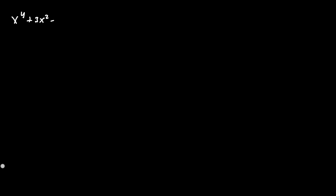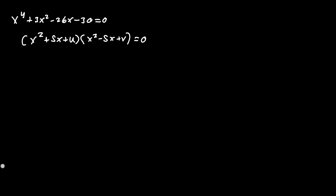Let's look at the quartic: x⁴ plus 3x² minus 26x minus 30 equals 0. We're going to split this into two quadratic factors: x² plus sx plus u, times x² minus sx plus v, equals 0. After expanding everything out, we get that u plus v equals 3 plus s², and v minus u equals negative 26 over s.